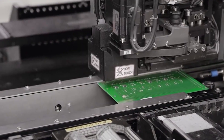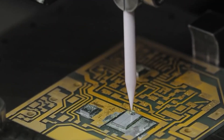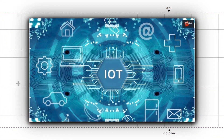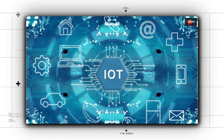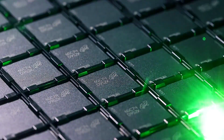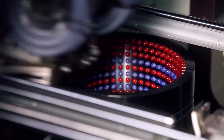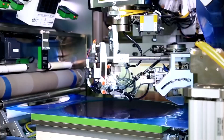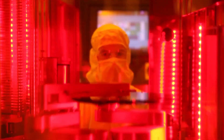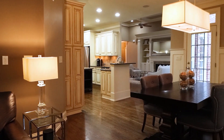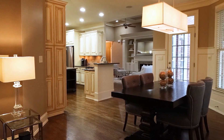And speaking of tiny, have you ever heard of the Internet of Things, or IoT? It's basically a fancy way of saying a bunch of tiny devices connected to the internet. And guess what? Semiconductors are the building blocks of these devices too. From your smart thermostat to your connected fridge, semiconductors are what make it all possible. Imagine a world without IoT — we'd have to manually turn off the lights and adjust the temperature. Talk about a nightmare.